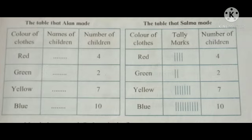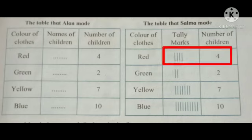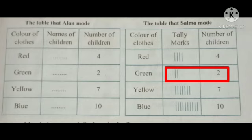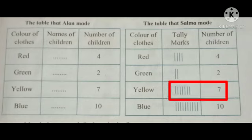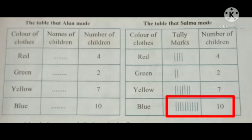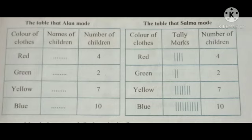Comparing the tally marks and numbers: red has 4 lines meaning 4, green has 2 lines meaning 2, yellow has 7 lines meaning 7, and blue has 10 lines meaning 10. The number of children wearing red is 4, and so is the number of tally marks. That is why they are called tally marks. Tally marks make our work easier and faster.